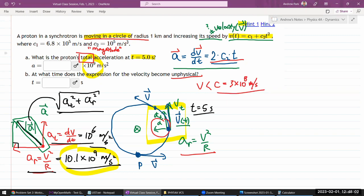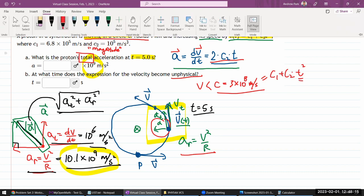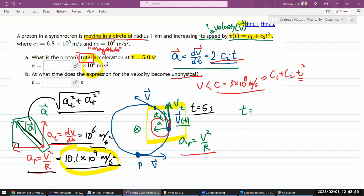So, let me just equate this to C1 plus C2 times T2, T squared. I think I can solve it for T squared. Let me just do that in my head in the interest of time. T is equal to square root of 3 times 10 to the 8 meters per second minus C1 divided by C2.